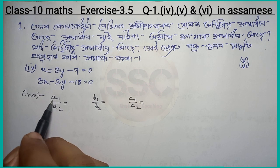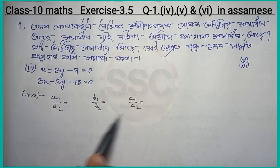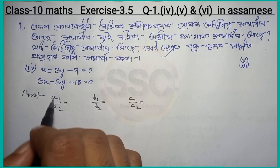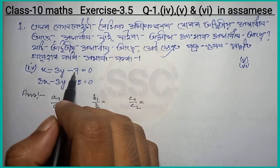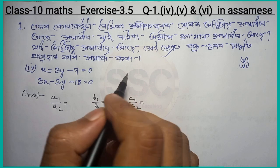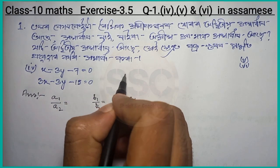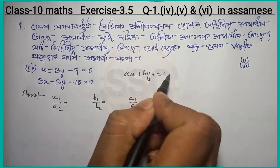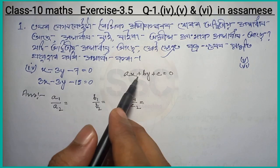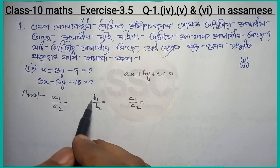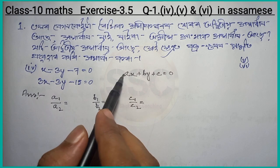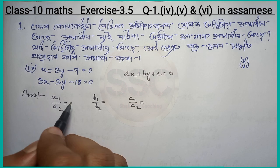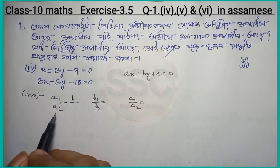This is the condition of A1 by A2, B1 by B2, C1 by C2. This is the condition of A1, B1, C1 by C2. This is the condition of A1, B1, C2 by C2, and A1 and B1 is the condition of A2.